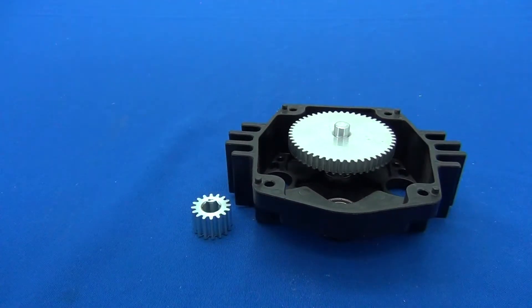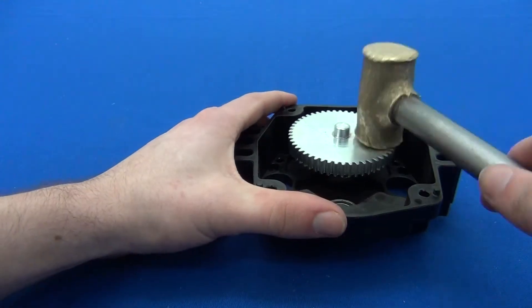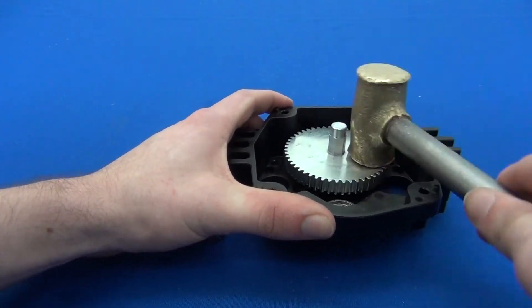We're going to put it onto the cluster shaft with the little bumped surface facing down. That little bump is known as a boss. If it does not press on with your fingers, gently tap it with a brass hammer.